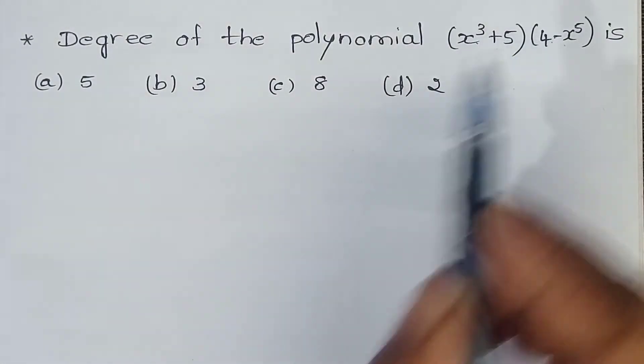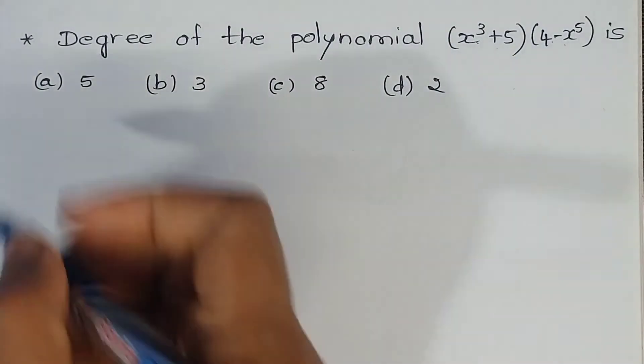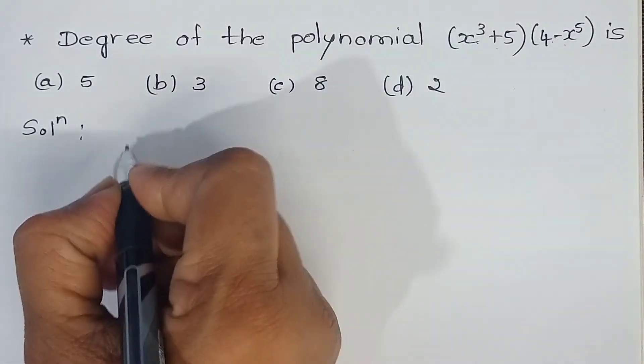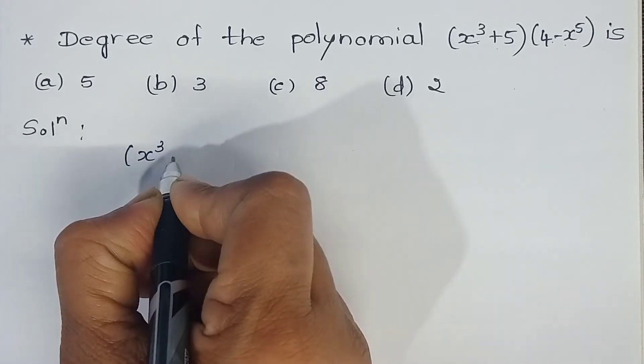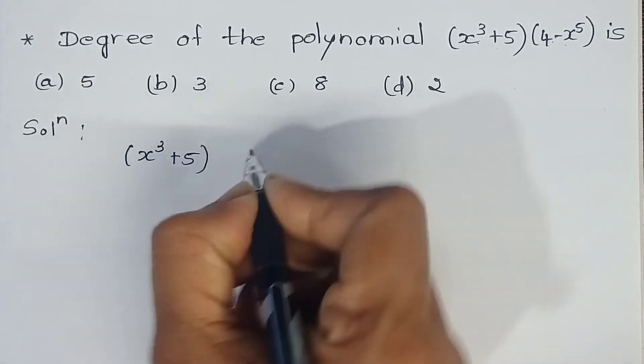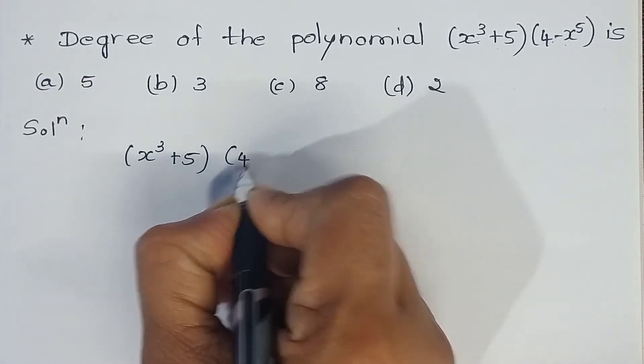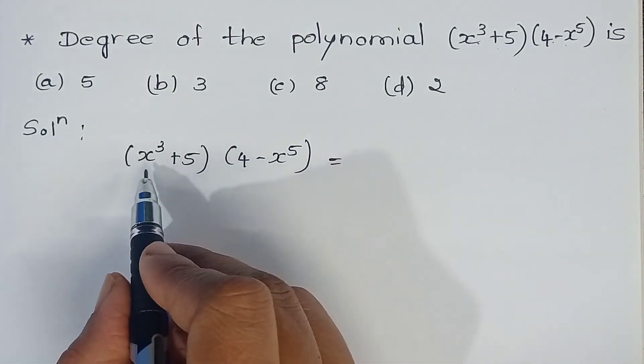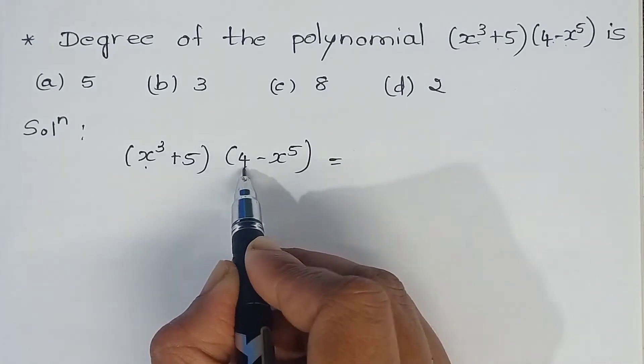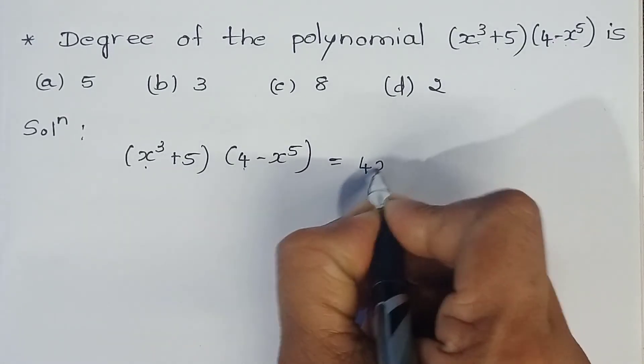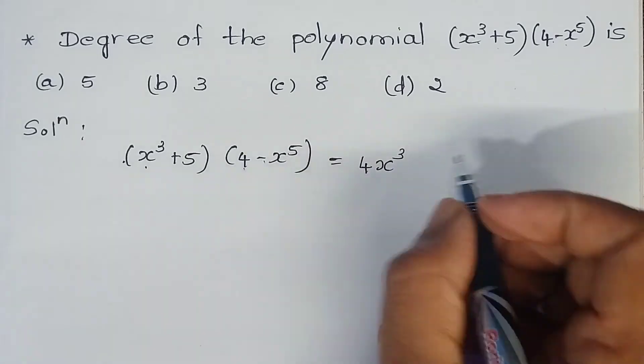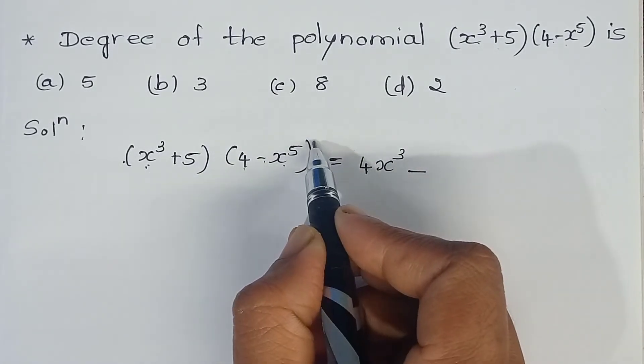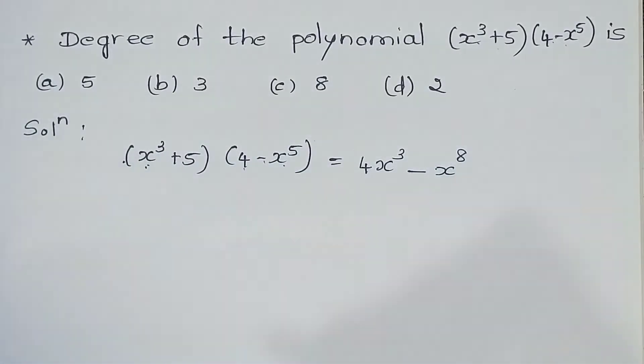First, let's multiply these two. Now let's multiply (x³+5) into (4-x⁵). x³ into 4 is how much? 4x³. Plus into minus is minus. x³ into x⁵ is x⁸.